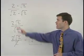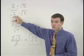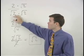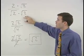So remember to get rid of a square root in the denominator of the fraction, multiply top and bottom of the fraction by that square root.